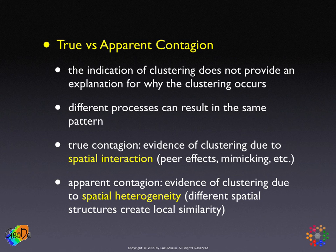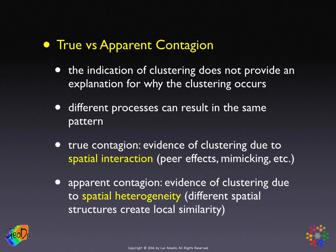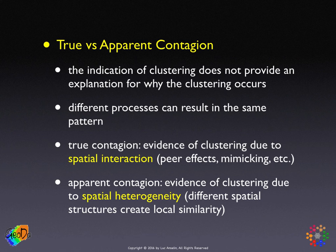In the literature, a distinction is made between true contagion and apparent contagion, because all too often a pattern of clustering is interpreted as the presence of contagion — but that is not necessarily the case. True contagion is when clustering happens as a result of true spatial interactions, such as peer effects, mimicking, spreading a disease, spreading information, or adopting new innovations. In contrast, apparent contagion looks like contagion but is not — the clustering is not due to an interaction effect but rather to spatial heterogeneity and different spatial structures that create local similarity.